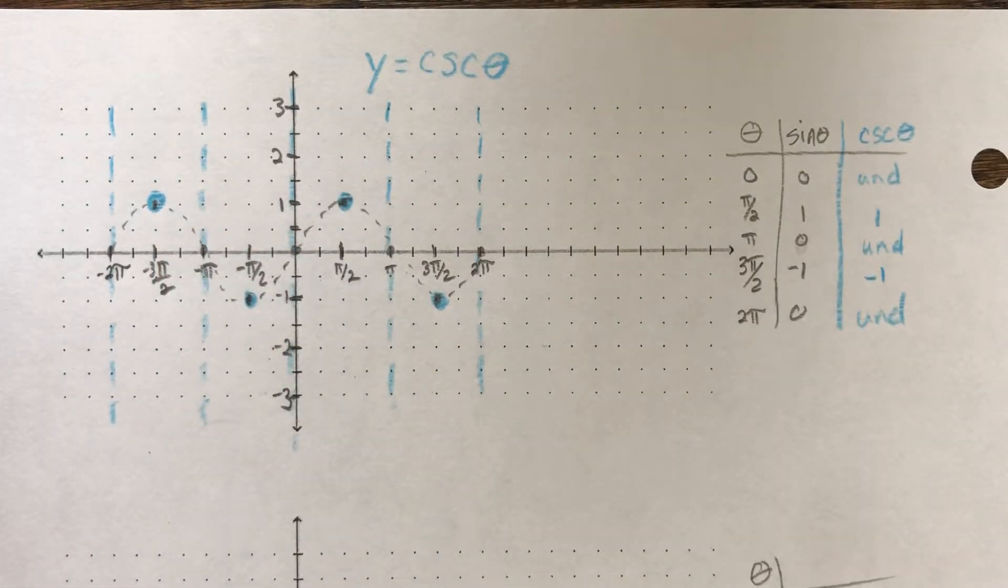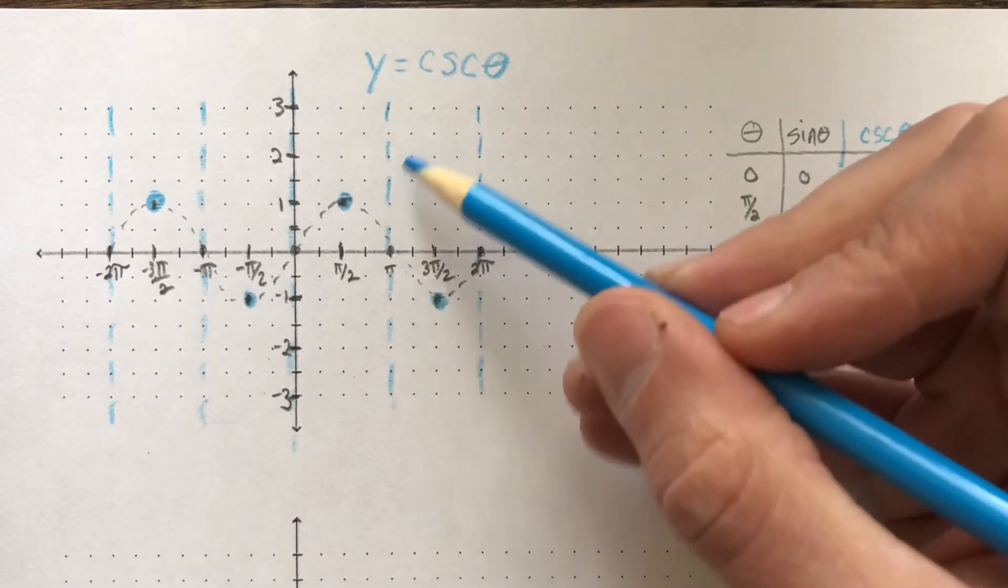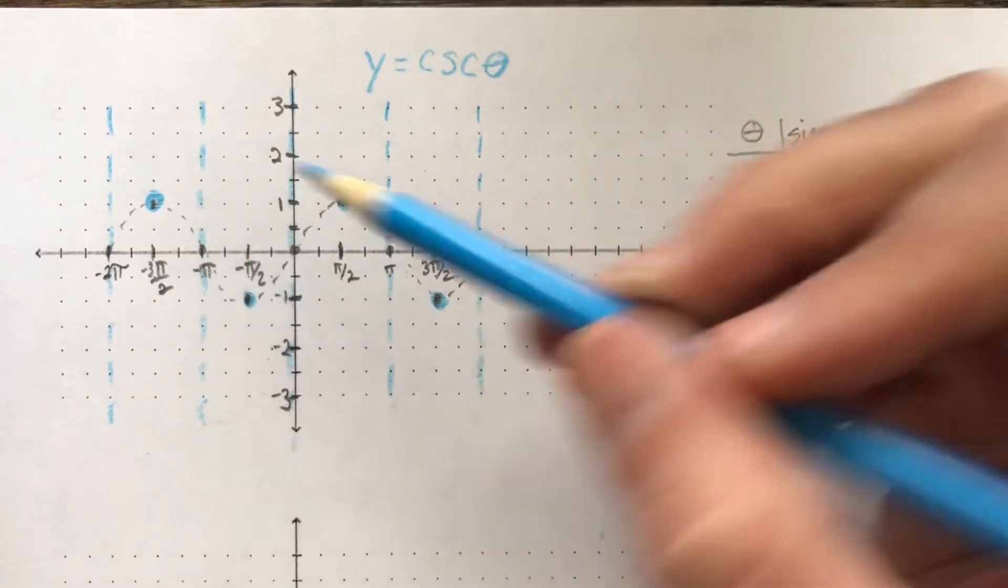So now when you go to make the actual graph, think about what a reciprocal is. It's the flipped fraction, right? You're flipping it. So if you imagine taking, if the asymptotes kind of split the sine graph into just like a bunch of U's, right?